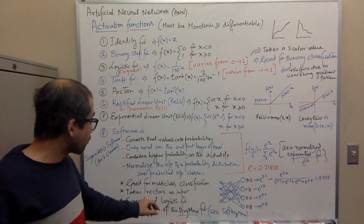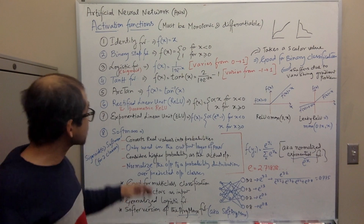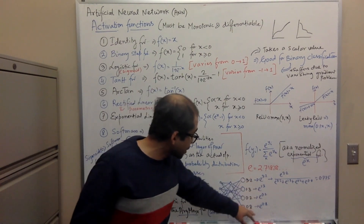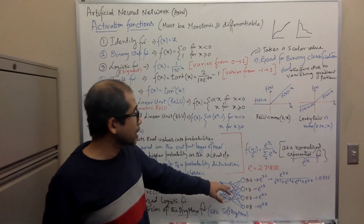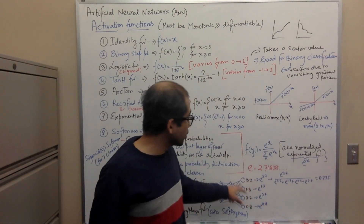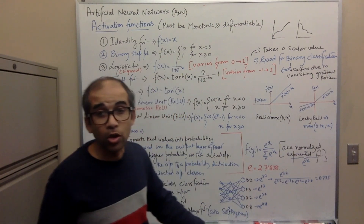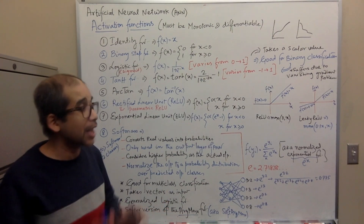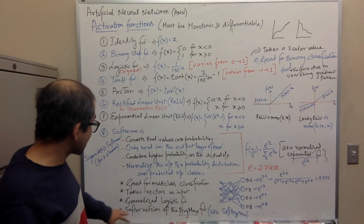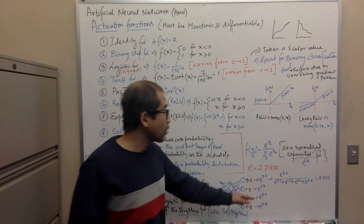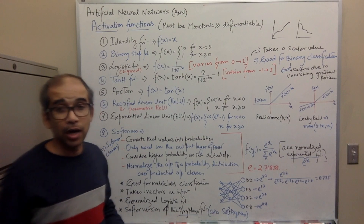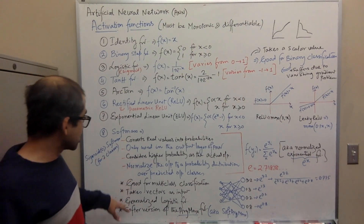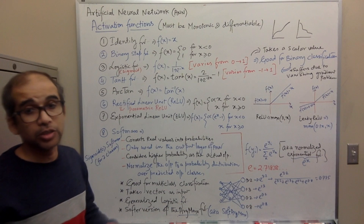Softmax is essentially a softer version of the argmax function. The argmax function takes a vector of real numbers and converts it so that the highest value becomes one and the rest become zero — a hard one-zero solution. Softmax is softer: it gives weights to all outputs, but after normalization the lower values have very low probability, and all probabilities add up to one. That's why softmax is also called soft argmax.